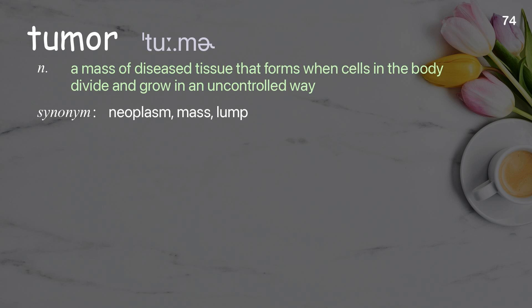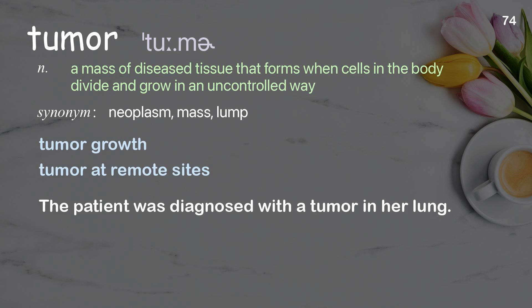Tumor: a mass of diseased tissue that forms when cells in the body divide and grow in an uncontrolled way. Examples: tumor growth, tumor at remote sites. The patient was diagnosed with a tumor in her lung.